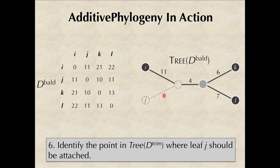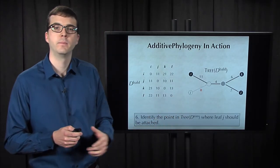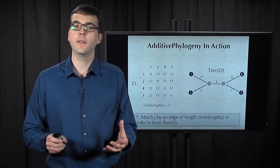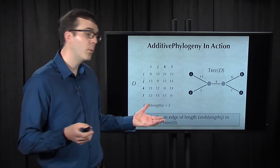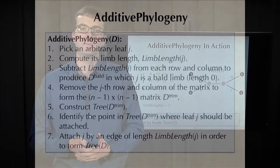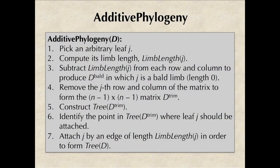We will then call additive phylogeny on this smaller matrix to reconstruct the simple tree that fits this trimmed matrix. Now, to add J back to the tree, we must identify the point in the simple tree fitting D trim where J attaches to the tree. Once we find this point, we can attach J by an edge of length equal to the limb length that we computed previously. So here is a summary of additive phylogeny. You may want to take a moment to review it before we continue.